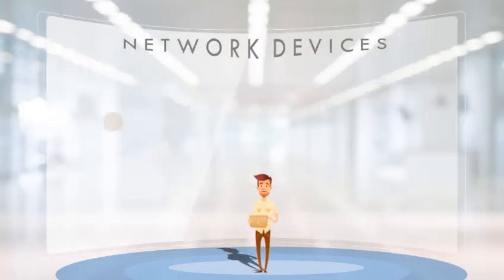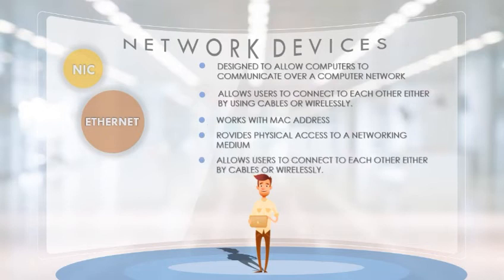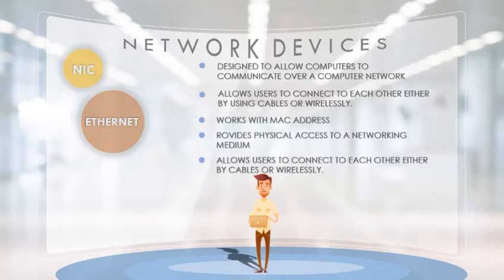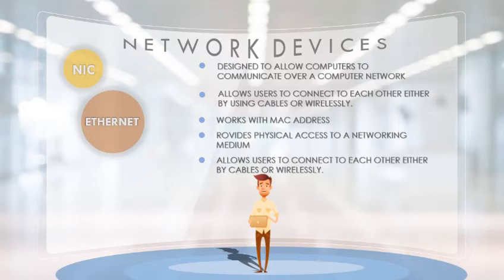Next is the network interface card and ethernet. Any computer that has to be connected to the network must have a network interface card installed on it — only then can it connect to a network. A computer communicates with other computers on a network with the help of a network interface card. It is designed to allow computers to communicate over a computer network, and it allows users to connect to each other either by using cables or wirelessly.